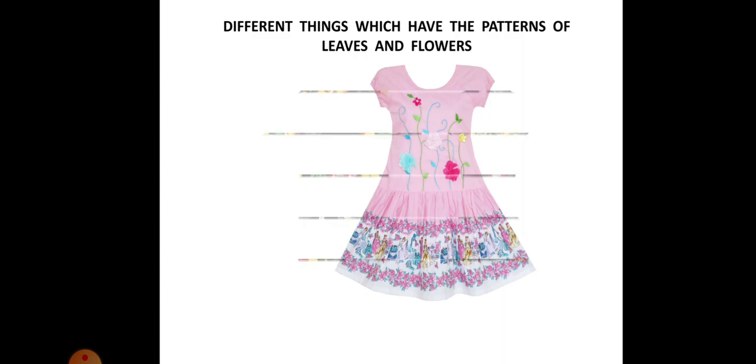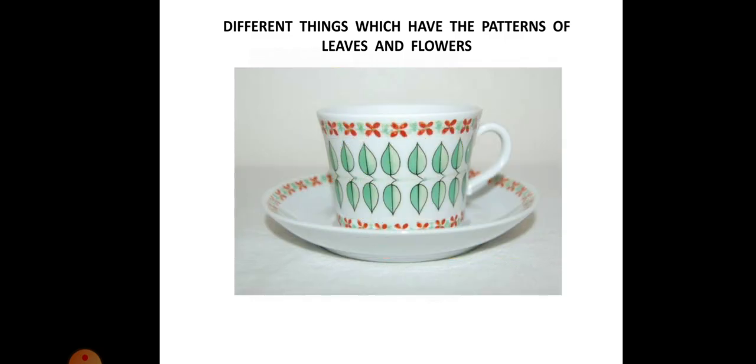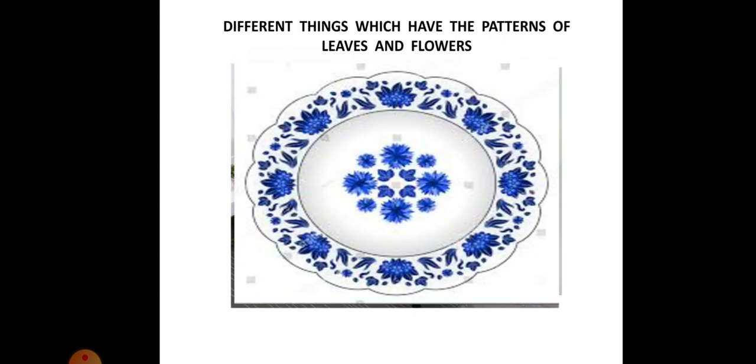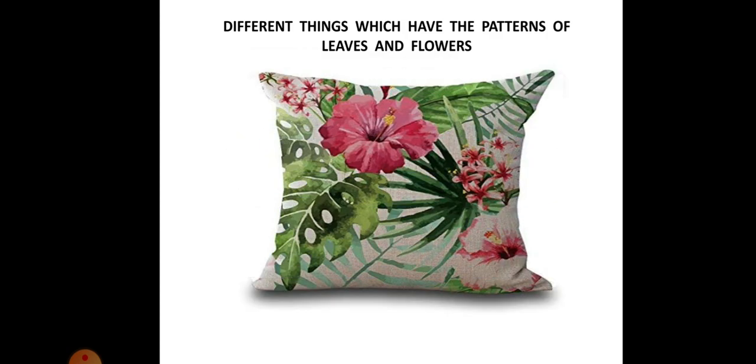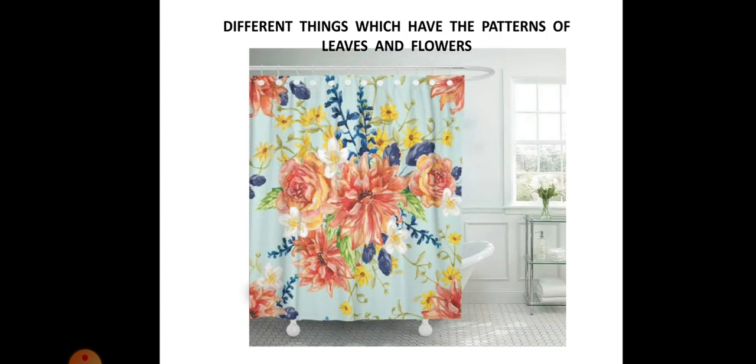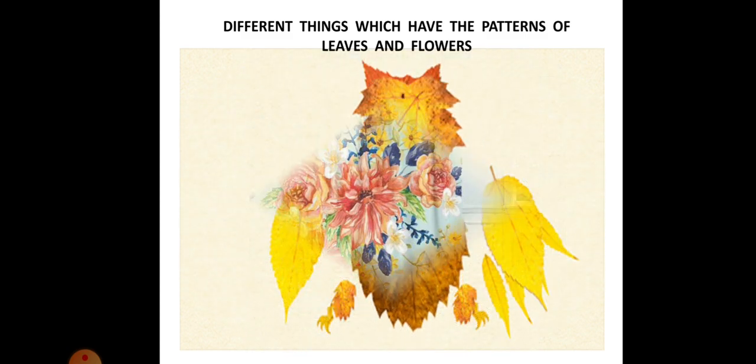Now different things which have the patterns of leaves and flowers. Look at your things around your house. And you can also watch that there are many things which have got the patterns of leaves and flowers. It means the designs of the leaves and the flowers on them. Just like these: the dresses, the vessels, bed sheets, the cushion covers, the curtains. Oh wow. Just look around your house and find.